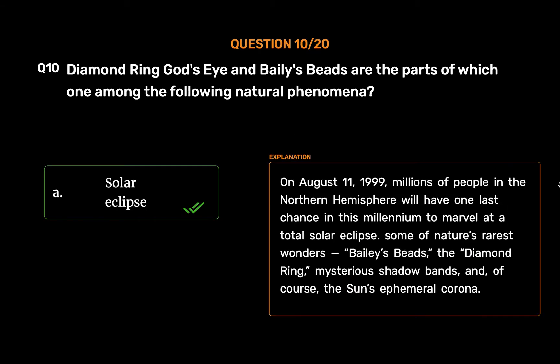On August 11, 1999, millions of people in the Northern Hemisphere had one last chance in that millennium to marvel at a total solar eclipse. Some of nature's rarest wonders include Bailey's beads, the diamond ring, mysterious shadow bands, and of course the sun's ephemeral corona.